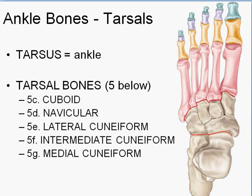The rest of the tarsal bones are 5c through 5g. 5c is the cuboid, which is on the outside of the foot closest to the metatarsals. Moving to the inside and articulating with the talus is the navicular. The navicular connects to three bones called cuneiform bones: lateral, intermediate, and medial — going outside in. The lateral cuneiform is on the outside, intermediate is in the middle, and the medial cuneiform is on the inside, closest to the midline.